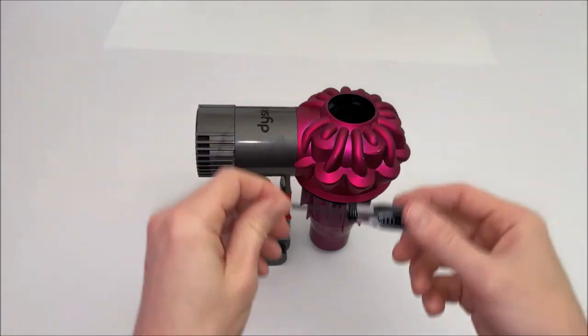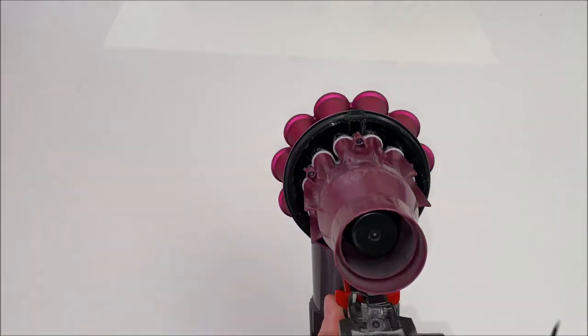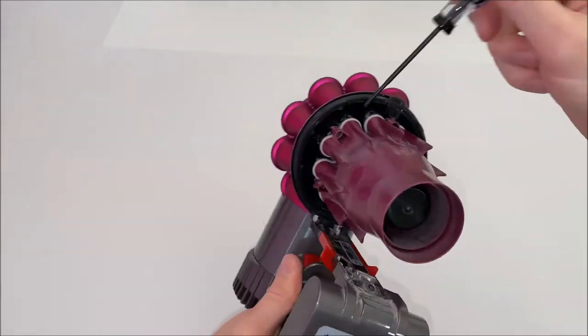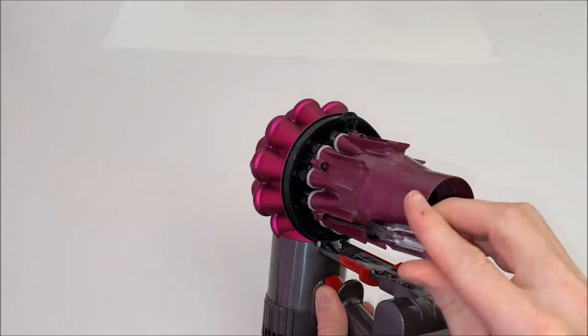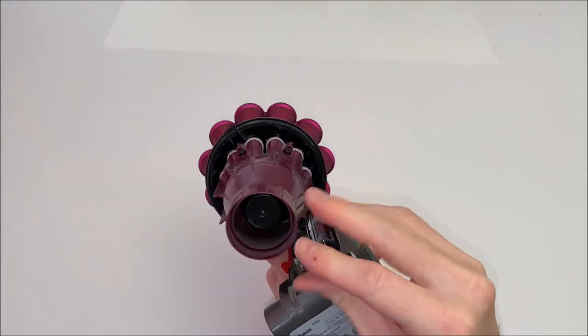Now we need to use the Torx screwdriver tool. There are five screws on the outside of this purple piece that you need to remove. Remove all five screws by turning the tool counterclockwise. Set the screws somewhere where you won't lose them.